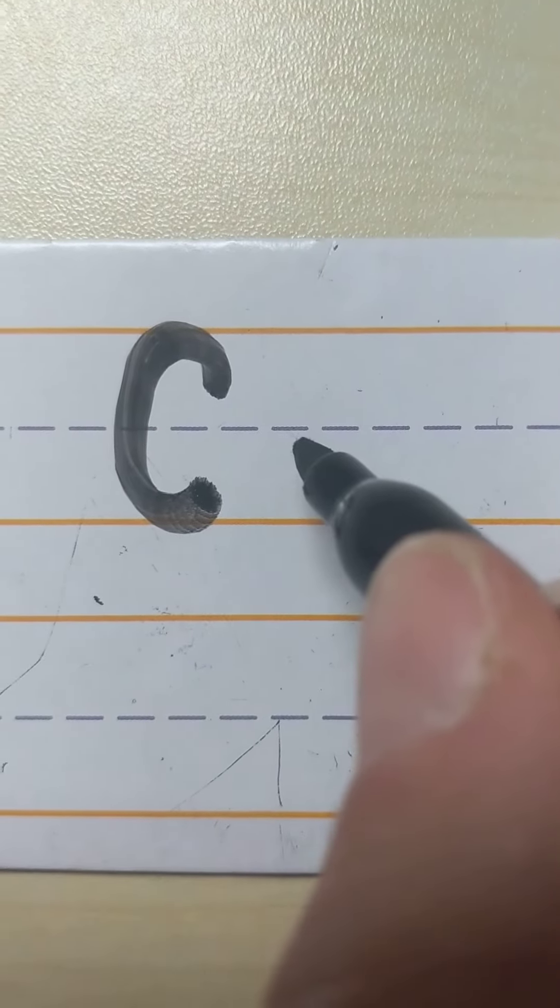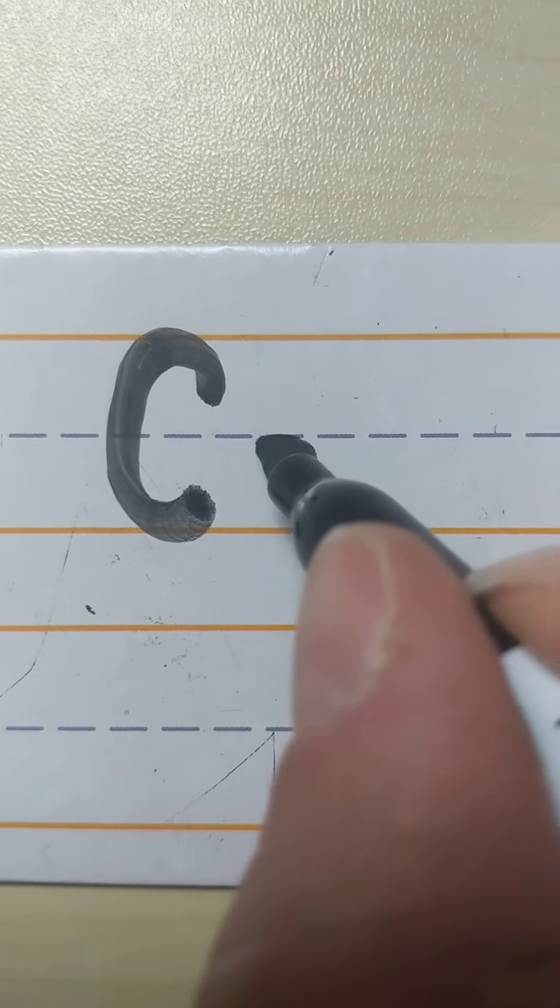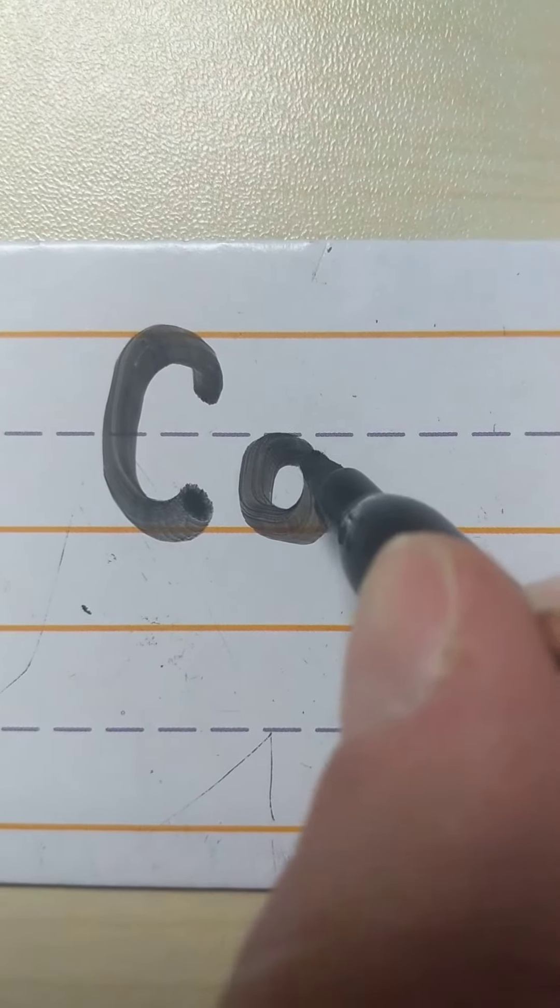Now O, this is a lowercase O, so we're going to start right below the dotted line. Once again, we're going to make that C shape to the bottom line, but this time we're going to close it up.